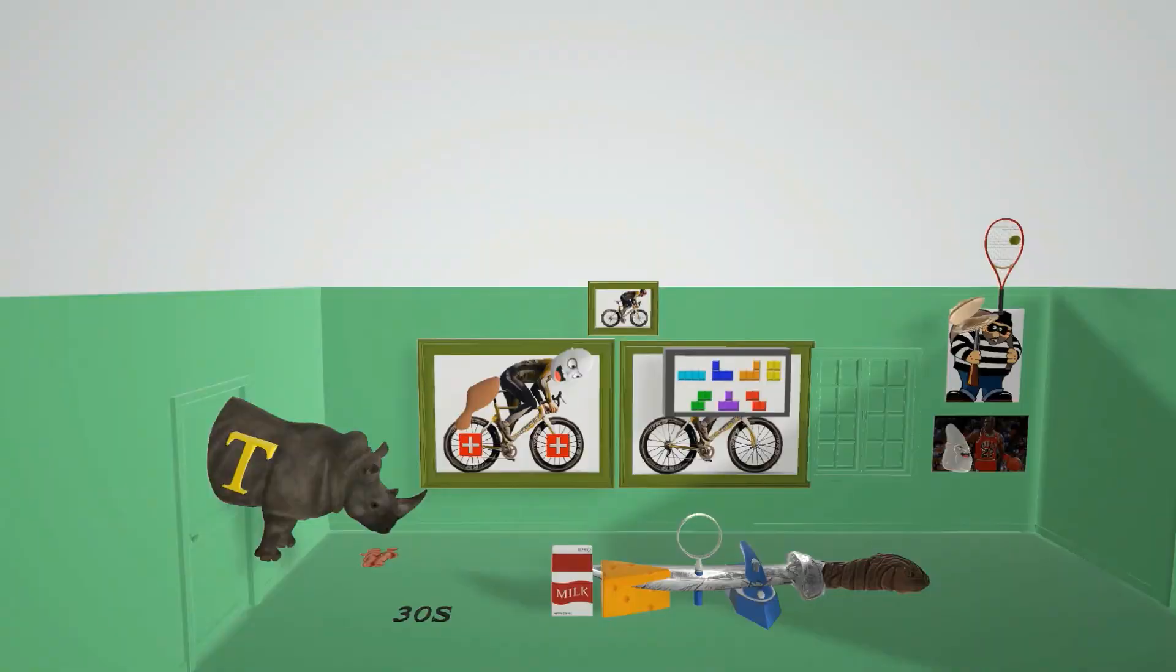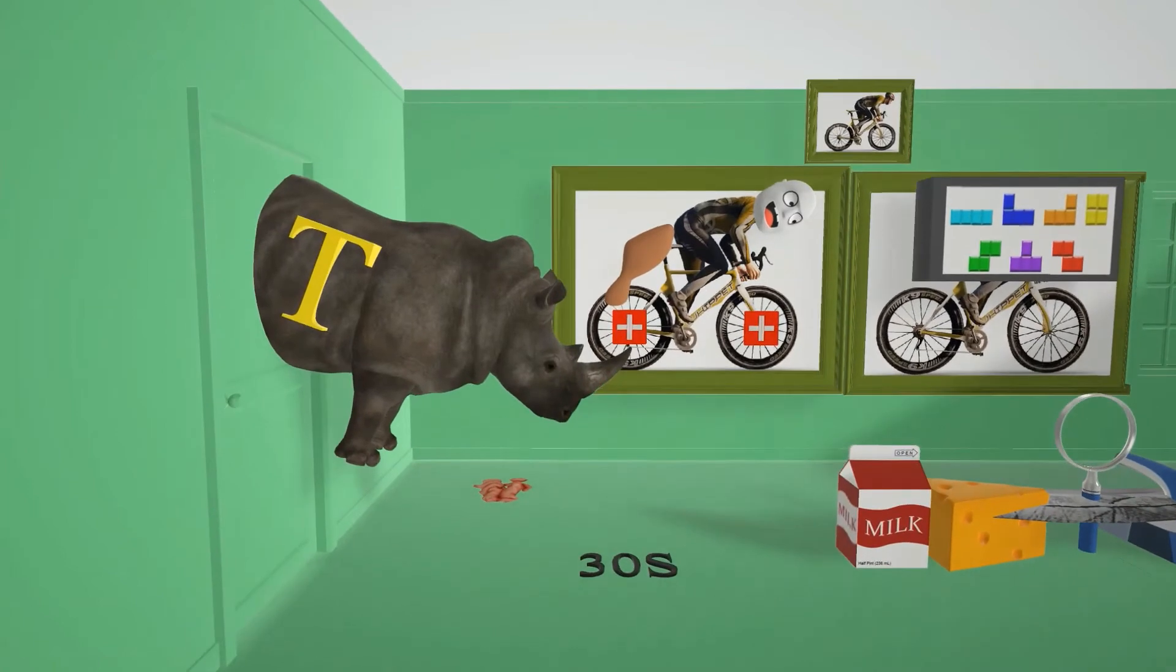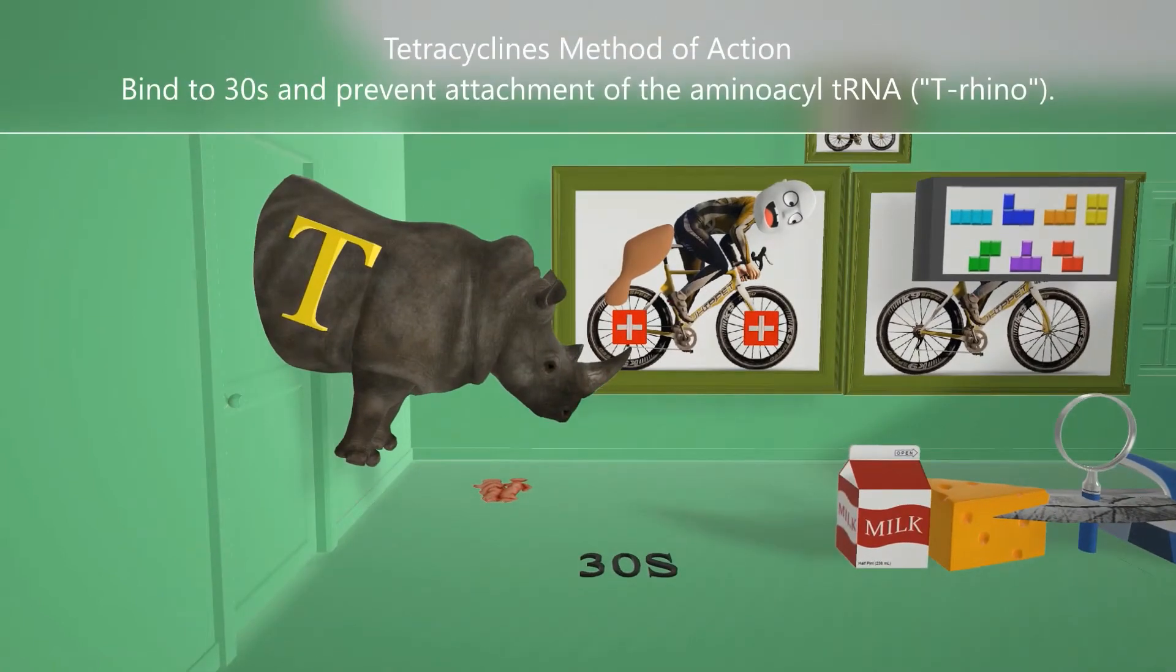Now let's talk about the mechanism of action of tetracyclines. Tetracyclines are bacteriostatic antibiotics that bind to the 30S subunit. That's why we have this rhino over here. We have the 30S on the floor and we have this rhino, this T rhino, trying to attach to it but being prevented.